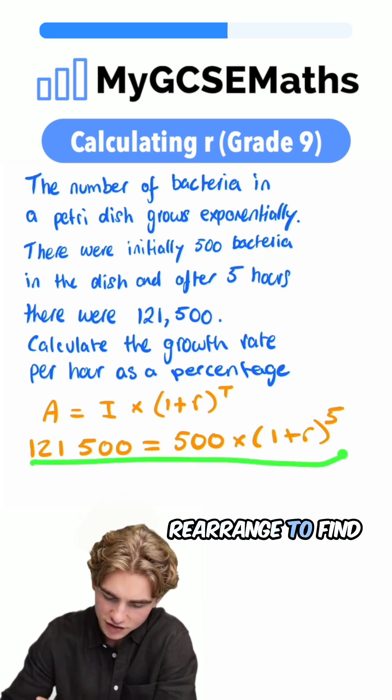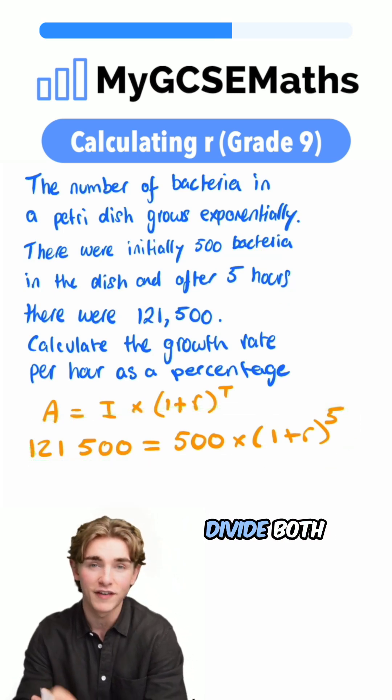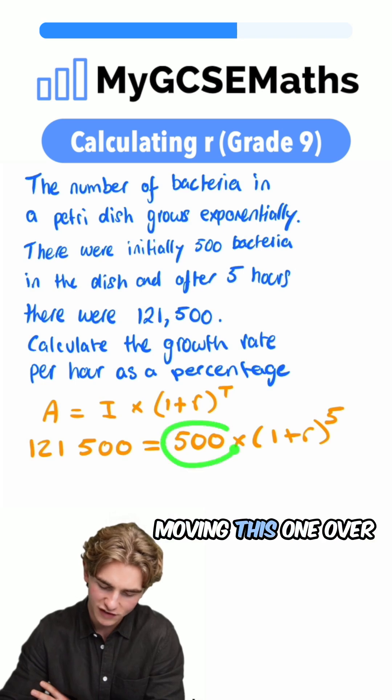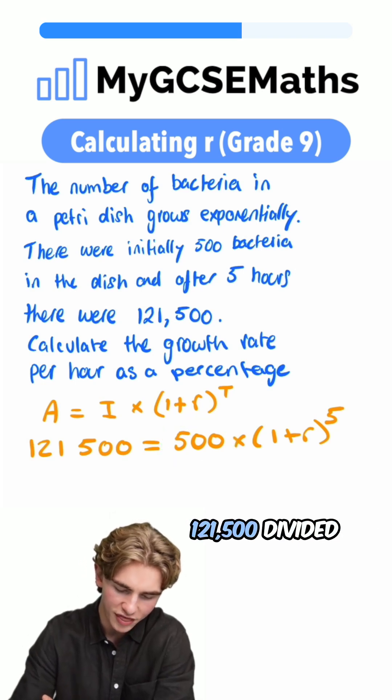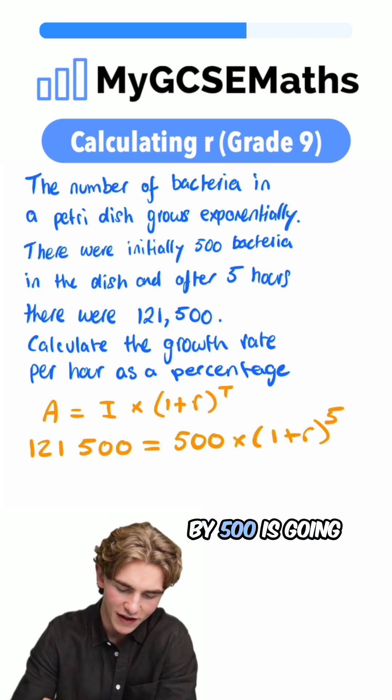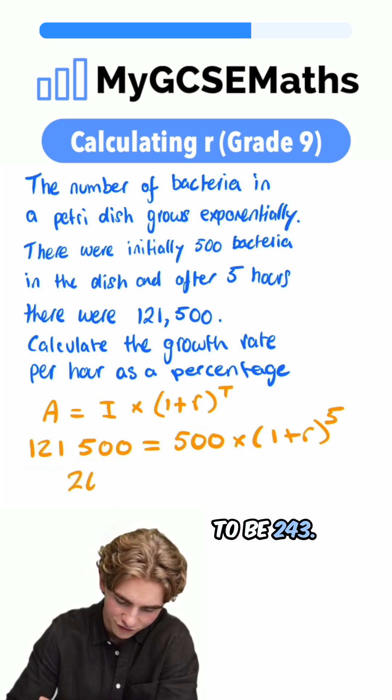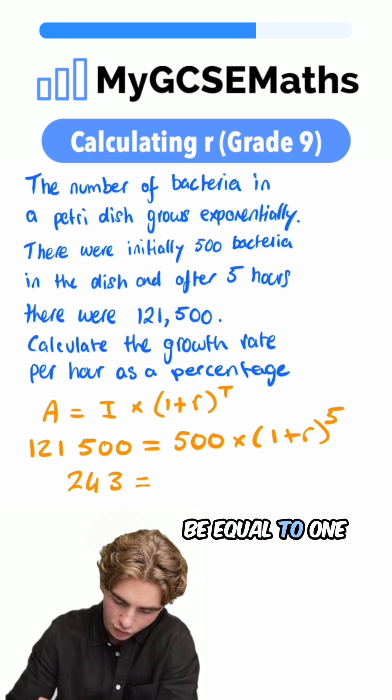Now we have an equation to rearrange to find the value of r. First step, let's divide both sides by 500. 121,500 divided by 500 is going to be 243. That's going to be equal to one plus r to the power of five.